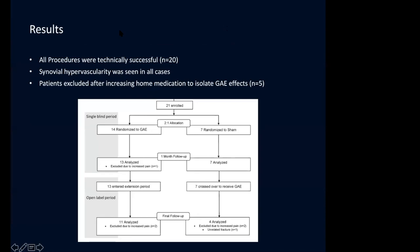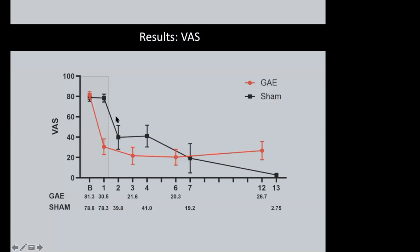In our clinical study, all procedures were technically successful with synovial hypervascularity seen in all cases. Patients who increased their home medication were excluded and considered failures. Looking at the graph—focus on the GAE group (red) versus sham group (black) in the first month—there's a huge difference between GAE and sham. After that, the sham group crossed over and did similarly well as the GAE group in terms of pain. The WOMAC score showed the same pattern—the sham group saw no statistically significant improvement in the first month, but once they crossed over, they saw significant improvements, just like the GAE group.